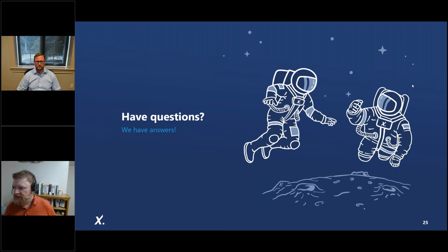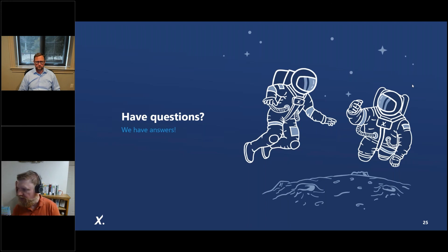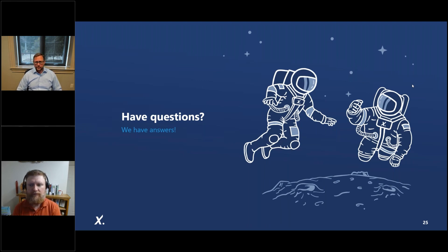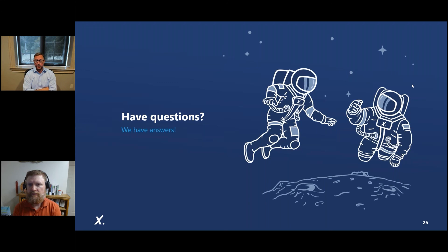Another question: can the JEDOX assisted planning software be integrated with ERP systems like SAP? It can interact with SAP data — there are some data strategy discussions you'd want to have, but the short answer is absolutely. All data is really on the table: third-party forecasts, data from your ERP, data from your CRM — it's all available to use. The more data the AI engine interacts with, the better the predictions are.